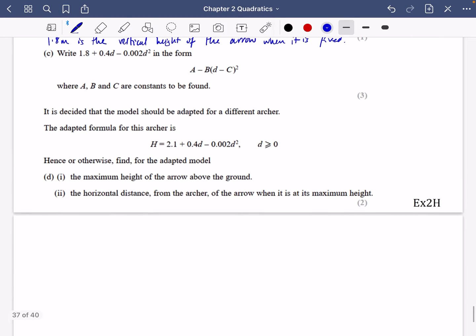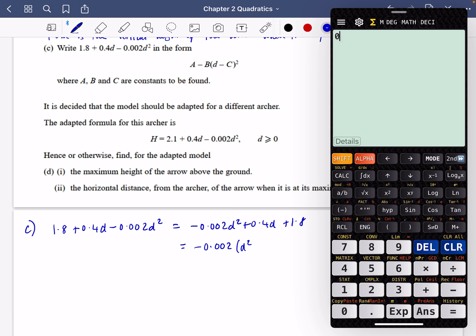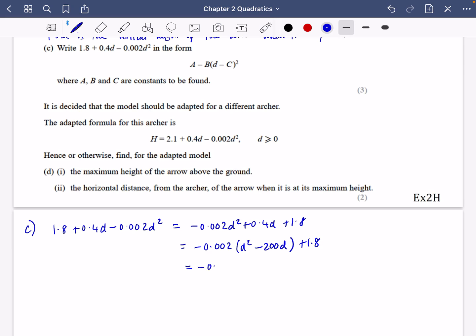Then it wants us to do completing the square. So it's going to be really similar to that one we've done before. So we have 1.8 + 0.4d - 0.002d². I'm going to write -0.002d² in an order that I like, and I'm going to factorize by taking out this. So I'm going to divide by -0.002. So it's 0.4 divided by -0.002, which is -200. So it's -200d + 1.8.